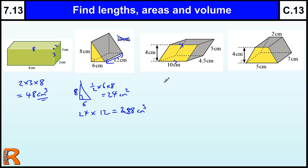So the base times the height. So the base is 10, and the height is 4. So the area of that parallelogram on the front is 40 centimeters squared.